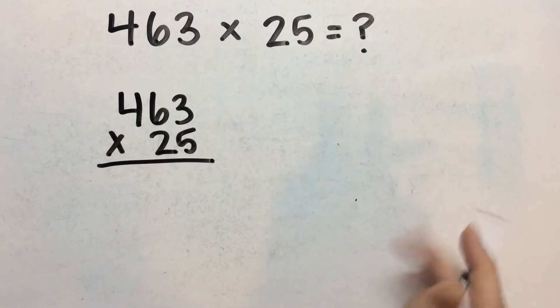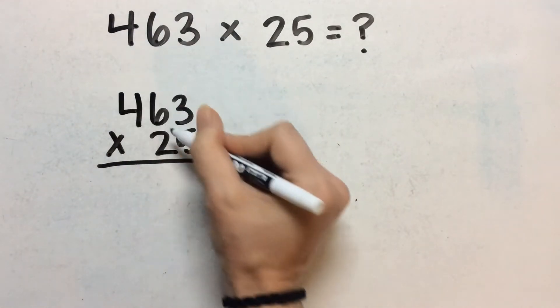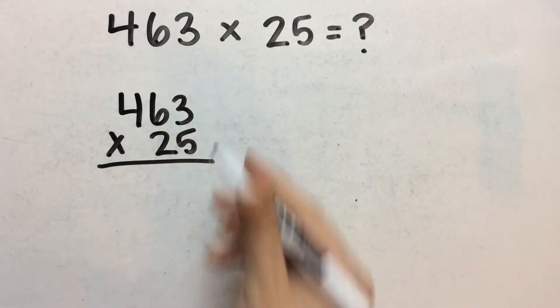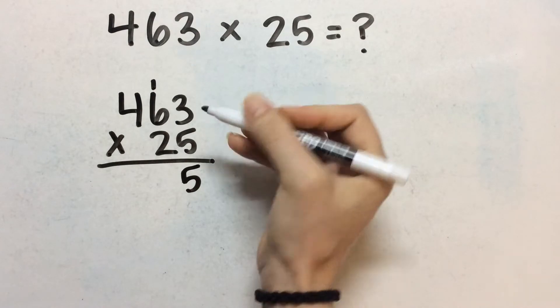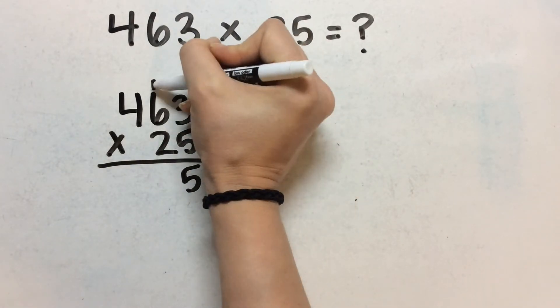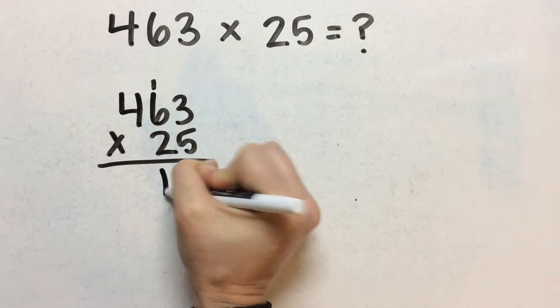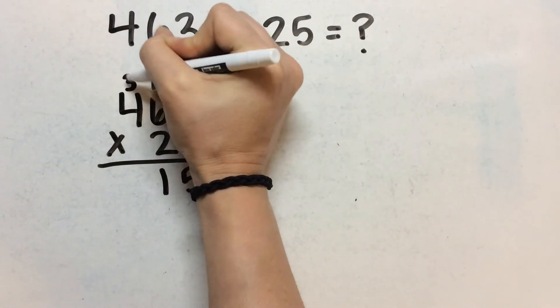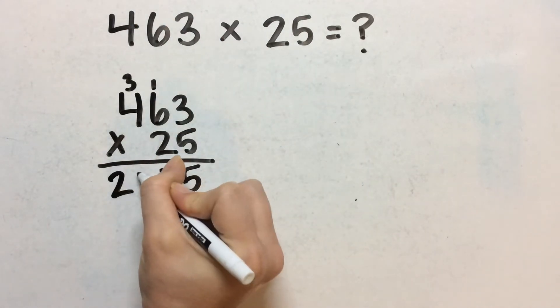And our first step is to multiply this one's digit by all of these digits. So the five times the three gives me 15, carry the one, five times six gives me 30. And then we add this one. So 31 and then carry the three again on top of the four.